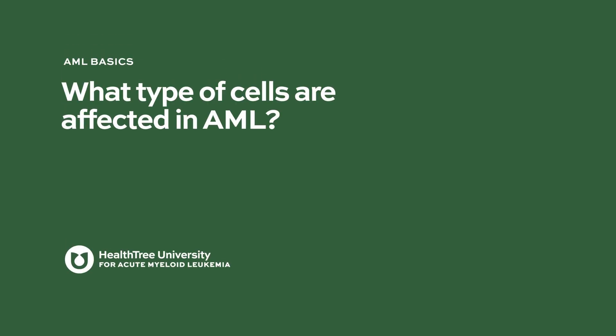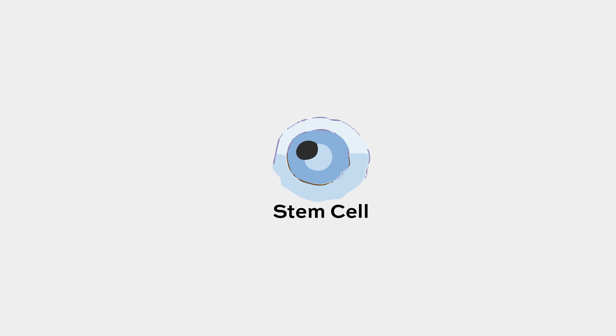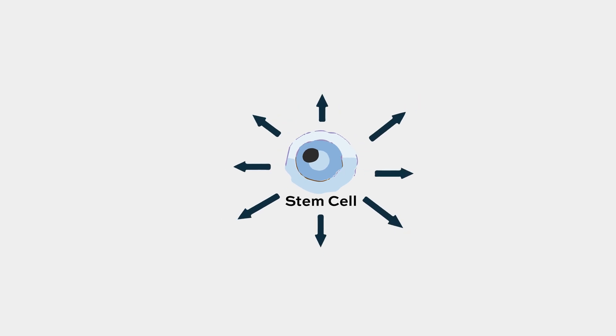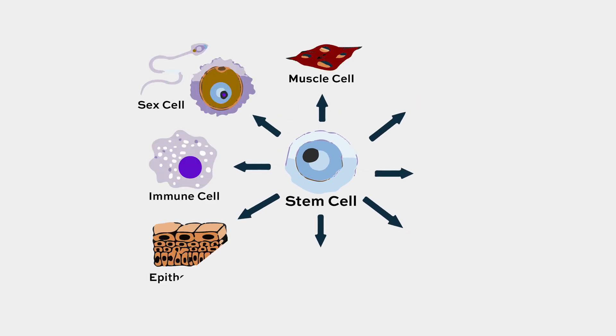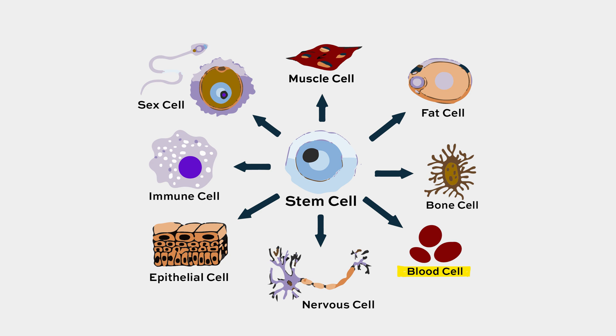What type of cells are affected in AML? AML is considered a stem cell disease. A stem cell means a hematopoietic stem cell — a stem cell that gives rise to all the different blood components: white cells, red cells, platelets. And stem cells are affected to different degrees.